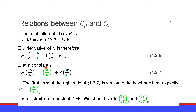At constant pressure, the dP/dT term vanishes. Therefore, the partial derivative of enthalpy H with respect to temperature T at constant pressure P equals the partial derivative of internal energy E with respect to T at constant pressure P, plus pressure P times the partial derivative of volume V with respect to T at constant pressure P. Equation 1.2.7.